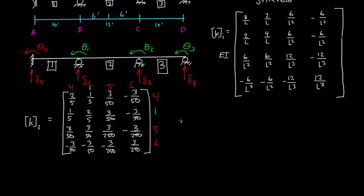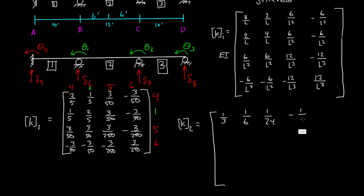Element 2, or K sub 2, is going to be somewhat the same thing. Element 2 has a length of 12, and we take 12 and plug it into this template. Figuring out those values, we get 1 third, 1 sixth, 1 twenty-fourth, negative 1 twenty-fourth. Those negative signs are very, very important. Then 1 sixth, 1 third, 1 twenty-fourth, negative 1 twenty-fourth. Then 1 twenty-fourth, 1 over 144, negative 1 over 144.